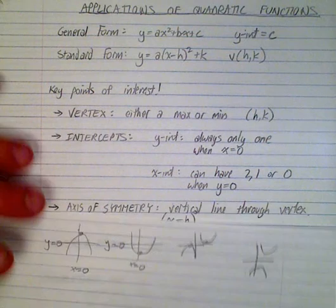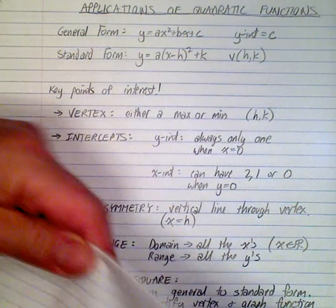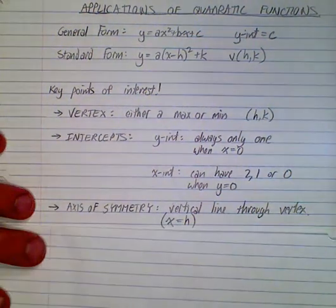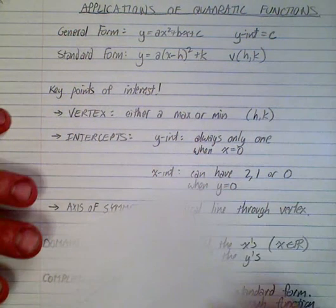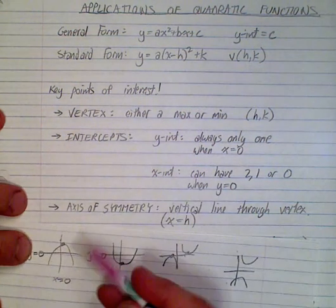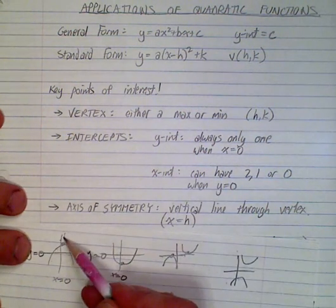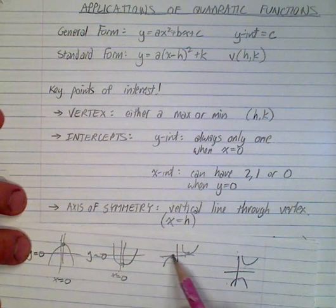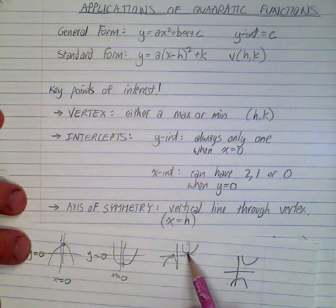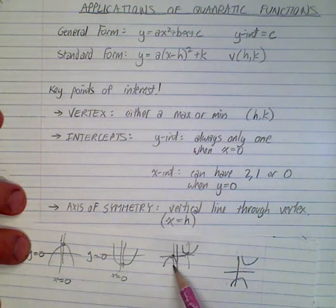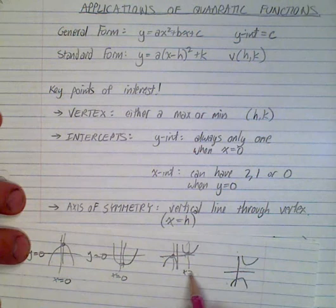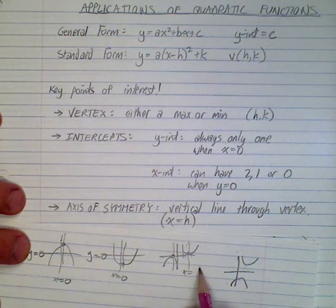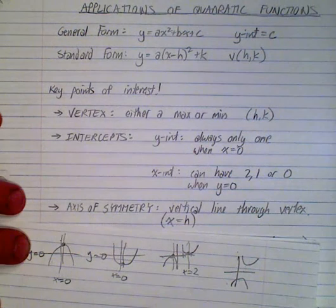The axis of symmetry is another key feature — it's the vertical line that runs right through the vertex. It's always in the form x equals some number, for example x equals 2.